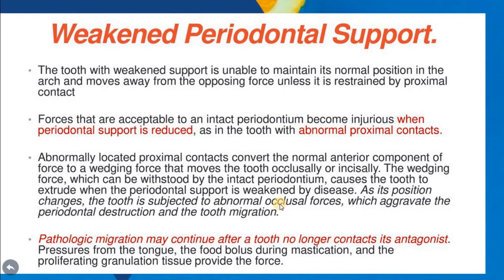In cases of weakened periodontal support, the tooth with weak support is unable to maintain its normal position. It moves away from the opposing force unless restrained by proximal contact. Forces that are acceptable to an intact periodontium become injurious when periodontal support is reduced, as in the tooth with abnormal proximal contact. Sometimes you may have an excessive occlusal force but also weakened periodontal support, which together may cause pathological migration.